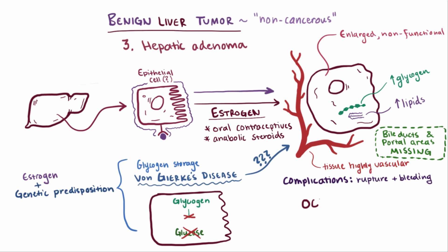If patients with adenomas are using OCPs and stop or reduce their dosage, the adenomas usually tend to regress. Likewise, for patients with von Gierke's disease, managing their diet — including glucose, insulin, and glucagon levels — has led to improvement and even resolution of these adenomas.